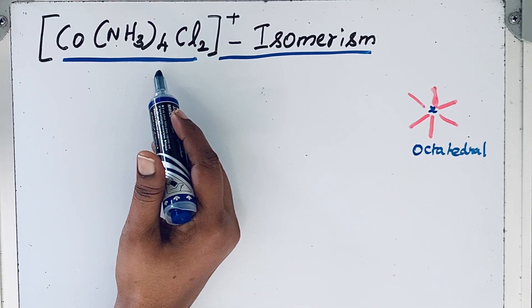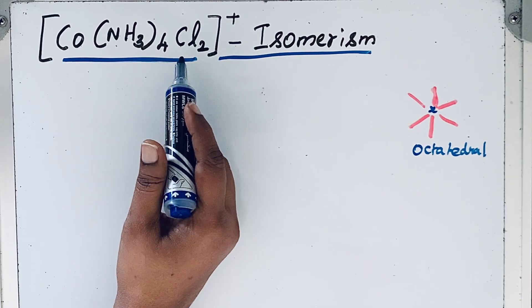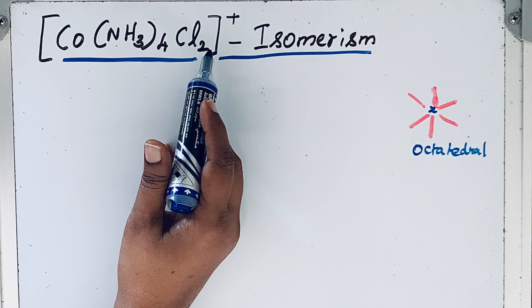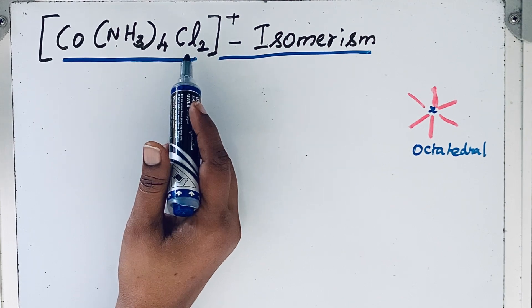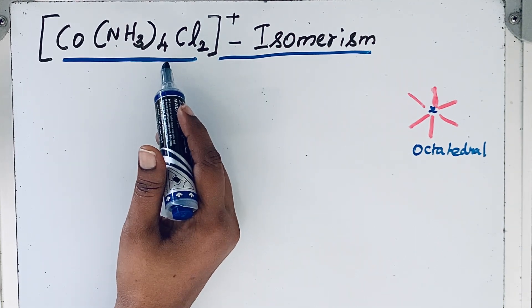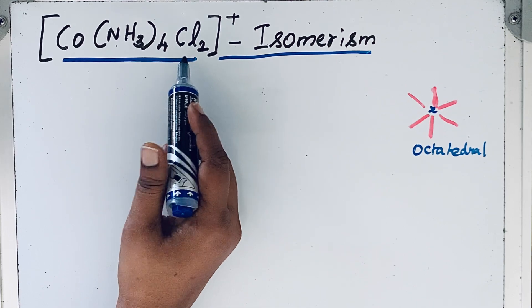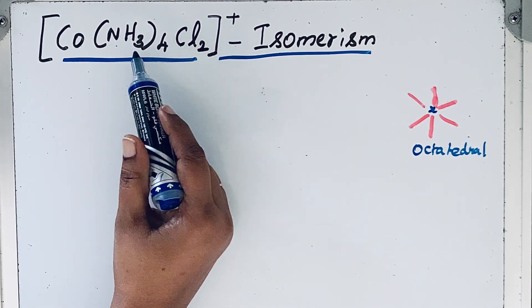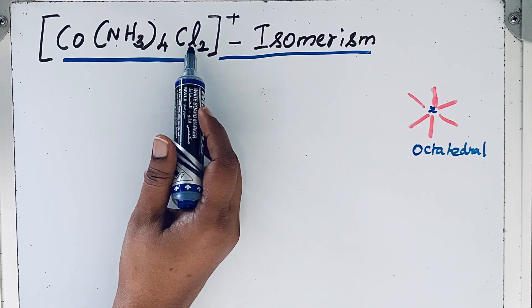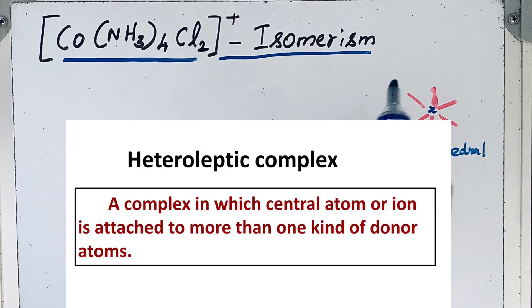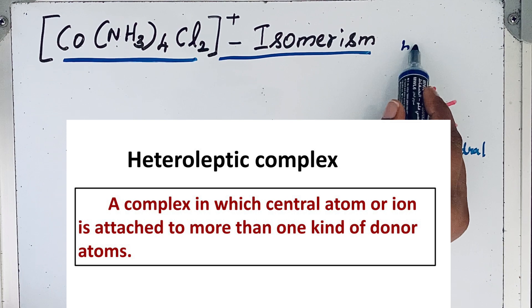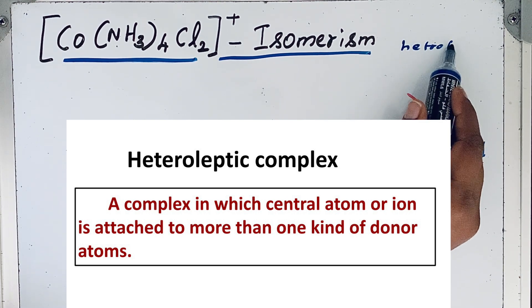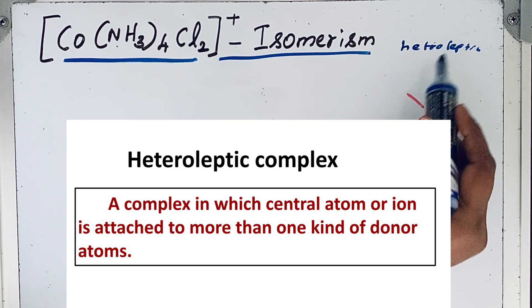Let us analyze the given compound Co(NH3)4Cl2 plus. Let us see that the first condition: there should be heteroleptic ligands. Yes, here there are two kinds of ligands, amine and chlorine. So the first condition, that means heteroleptic, is there.